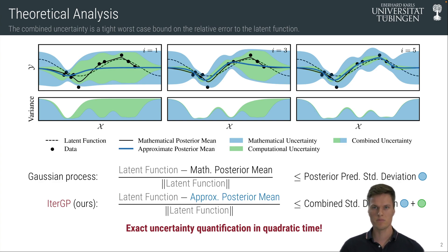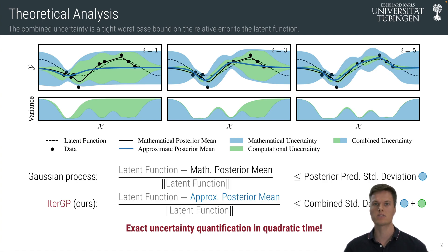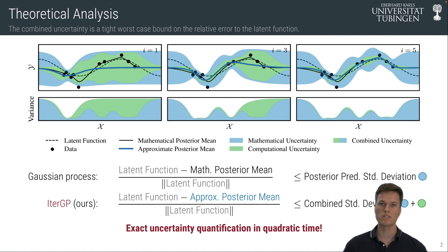For the approximation we suggest, which is based on iterative approaches, the same holds if you replace the posterior mean with the approximate posterior mean and a so-called combined uncertainty on the right-hand side. This bound is also tight, and the nice thing is you can compute both of these quantities in quadratic time — so you can trust the uncertainty estimate of the approximation just as much as you do an exact Gaussian process.